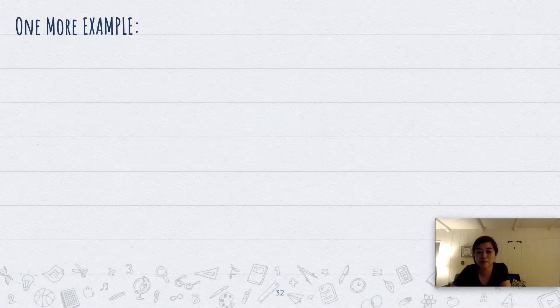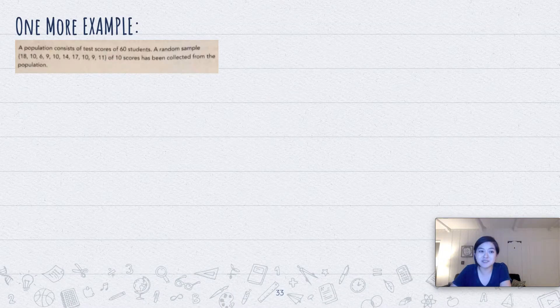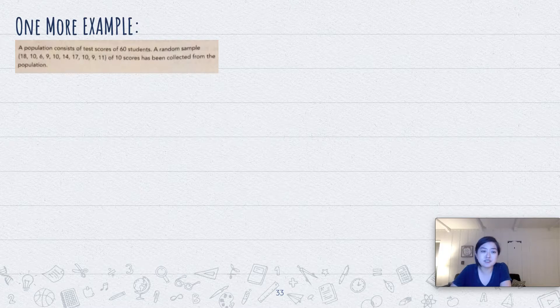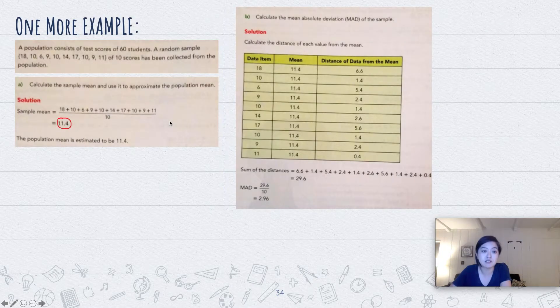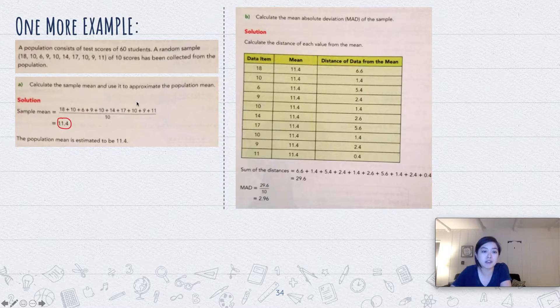One more example. A population consists of test scores of 60 students. A random sample of 10 scores has been collected from the population: 80, 10, 6, 9, 10, 14, 7, 9, 11. We're going to calculate the sample mean and use it to approximate the population mean. So the sample mean is, we're going to add all those data values divided by 10 and get 11.4. So the population mean is 11.4.